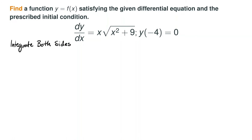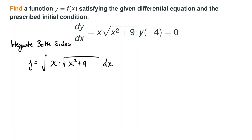As we integrate the left side, we know integrating the derivative of y with respect to x gives us back y, and then we're left with the integral of x times the square root of x squared plus 9 with respect to x. Thinking back to our integration techniques, since we have our inside function under the square root and its derivative is related to the outside term up to a constant, this helps us recognize we should use u-substitution.